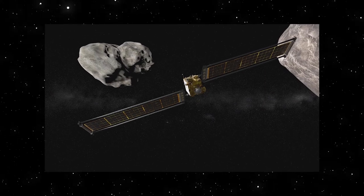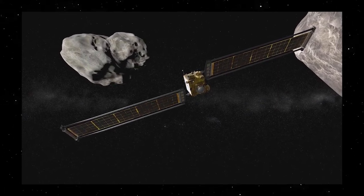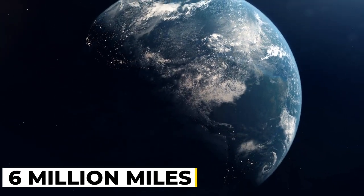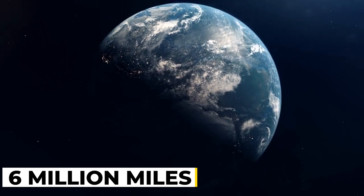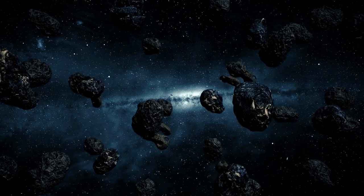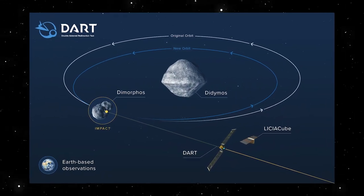DART was directed to its target Dimorphos by highly developed autonomous navigation software. Hitting a target that is 6 million miles from Earth and 525 feet in diameter is no small task. The navigation software was created to recognize and discriminate between Didymos and Dimorphos.